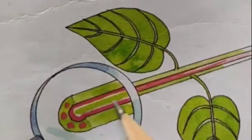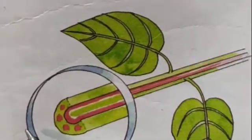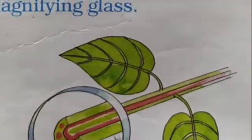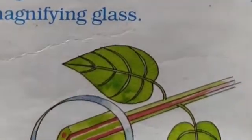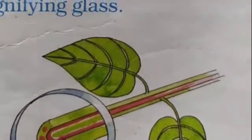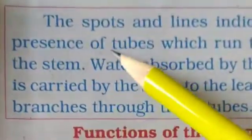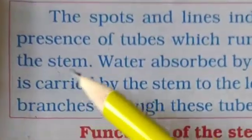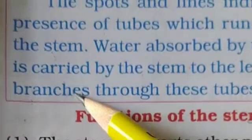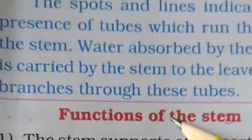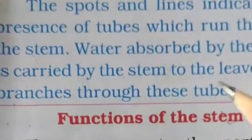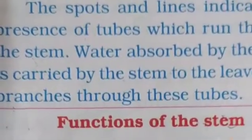We will see the stem — there are two tubes in the stem doing transport. Water and minerals are supplied through the stem. The spots and lines indicate the presence of tubes which run through the stem. Water absorbed by the roots is carried by the stem to the leaves and branches through these tubes. So the roots absorb water and the stem transports it to other parts of the plant.